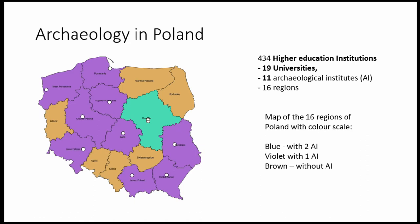In Poland we have 19 universities but only 11 archaeological institutes and departments. On the map we can see the distribution of archaeological institutes across regions. In green-blue we see regions with two universities offering archaeology, in purple regions with one institute, and in brown regions without any archaeological institutes.